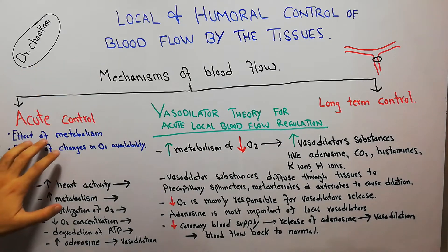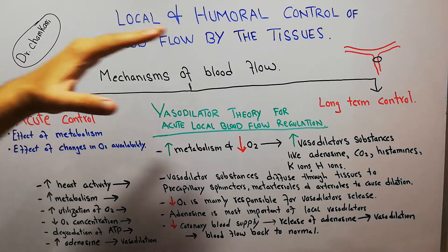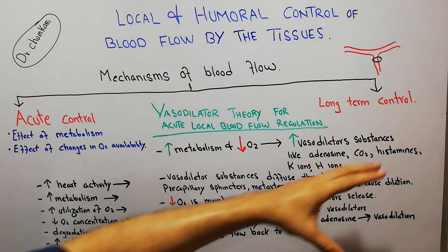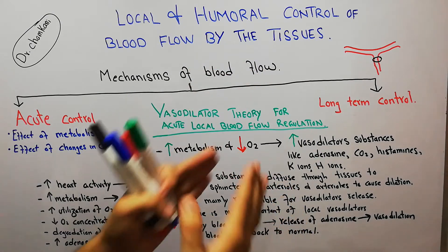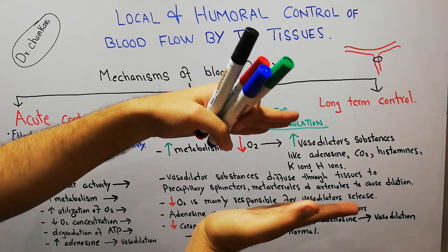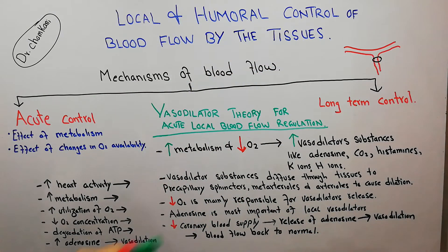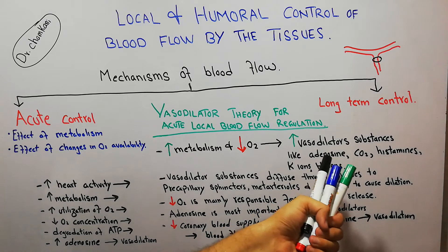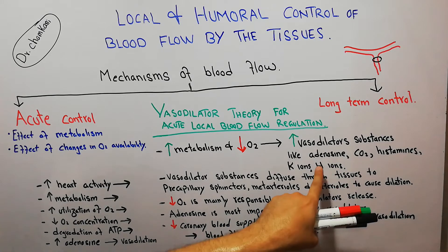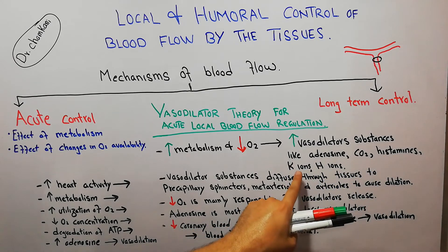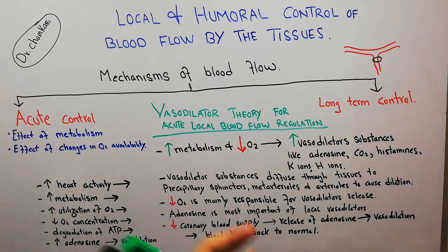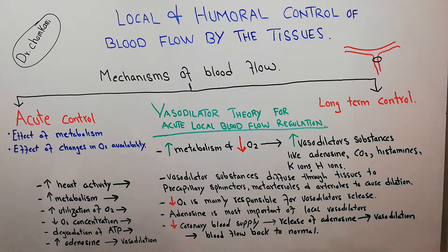According to this theory, if there is an increase in metabolism or a decrease in oxygen availability to any tissue, there is release of vasodilator substances which will dilate or increase the diameter of existing blood vessels. The most important vasodilator substances are adenosine, carbon dioxide, histamines, potassium ions, and hydrogen ions — these substances are responsible for increasing the size of blood vessels.